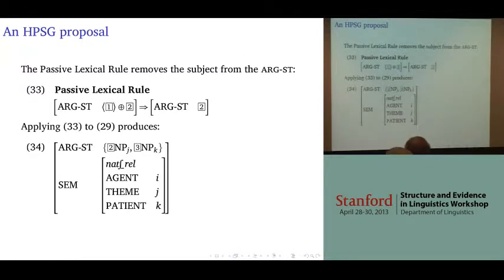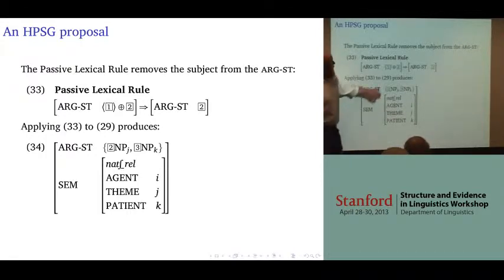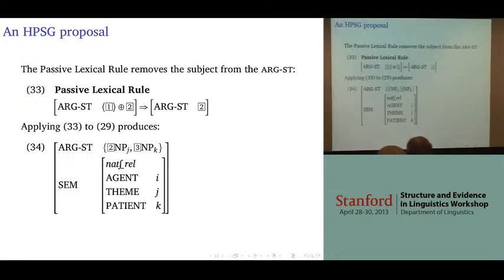For the passive — the fourth object property — using the passive lexical rule: there's one formulation where we take the first item of the argument structure and suppress it. The first item of the argument structure would be one that doesn't have anything preceding it.